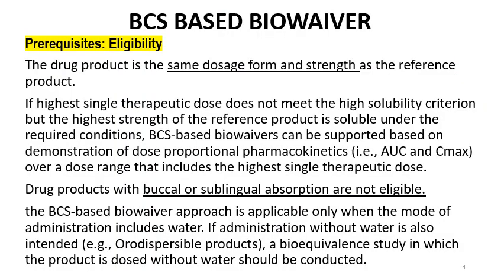The drug product must be in the same dosage form and strength as per the reference product. If you change the dosage form or strength, it will be difficult to justify eligibility, and if strength is changed, there will be no biowaiver. If the highest single therapeutic dose does not meet the high solubility criteria, but the highest strength of the reference product is soluble under the required conditions, then BCS-based biowaiver can be supported based on demonstration of dose-proportional pharmacokinetics — like AUC and Cmax.